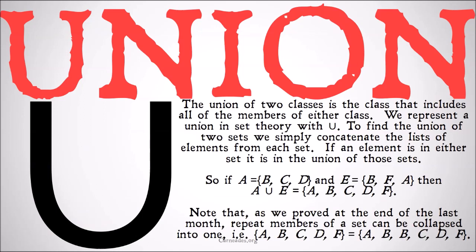The union of two classes is the class that includes all the members of either class. It's pretty simple. We represent a union in set theory with this kind of stylized U. To find the union of two sets, we simply concatenate the lists of elements of each set. If an element is in either set, it's in the union of those sets.